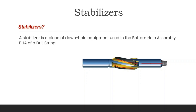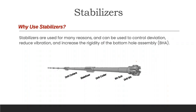Depending on the number, position, and gauge of the stabilizer, the well angle can be increased, held, or decreased. Additionally, stabilizers are used for many reasons — they can be used to control deviation, reduce vibration, and increase the rigidity of the bottom hole assembly.